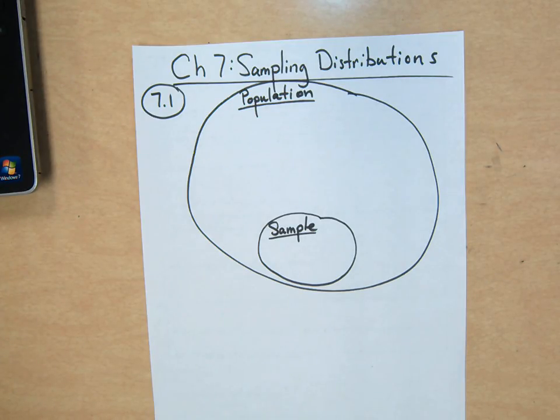This is starting Chapter 7 on sampling distributions. Just knowing what that word means is part of the challenge. What is a sampling distribution?